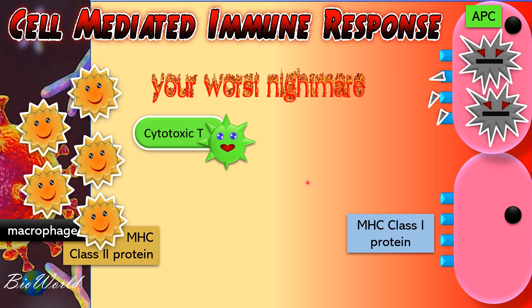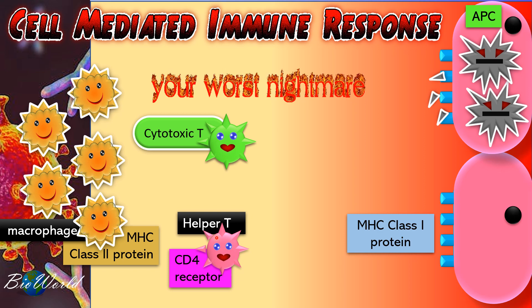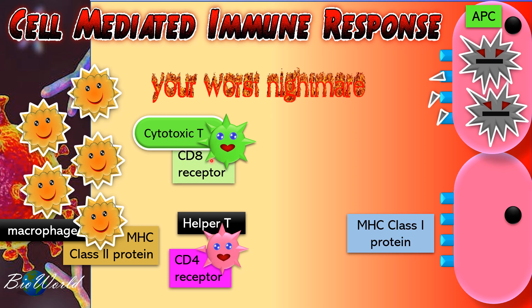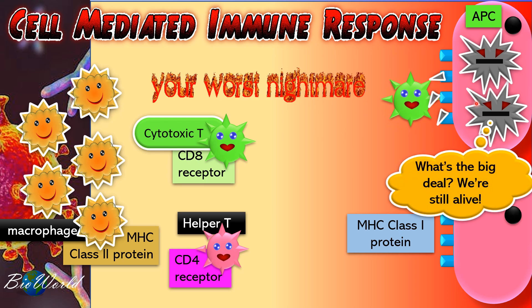Recall that when the macrophage was an APC, it was the helper T cells that came and bound to the APC using its CD4 receptor. So remember: CD4 binds to MHC class 2. But over here, the APC is displaying MHC class 1 — that is why helper T cannot help the infected cell. However, cytotoxic T has surface proteins called the CD8 receptor, and the CD8 receptor can bind to MHC class 1 protein.